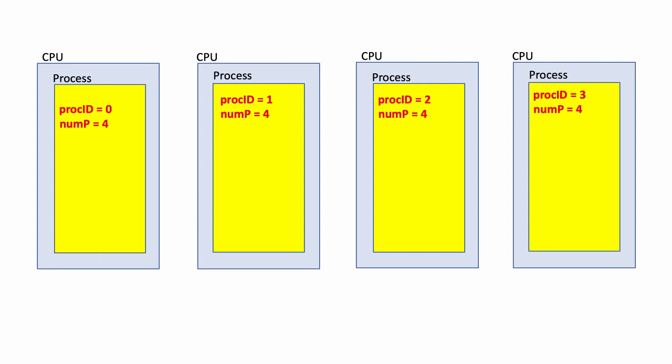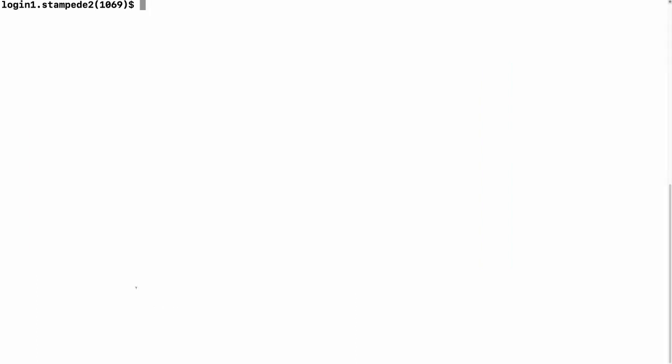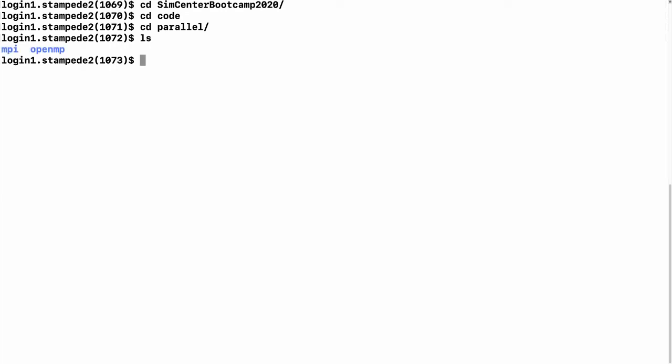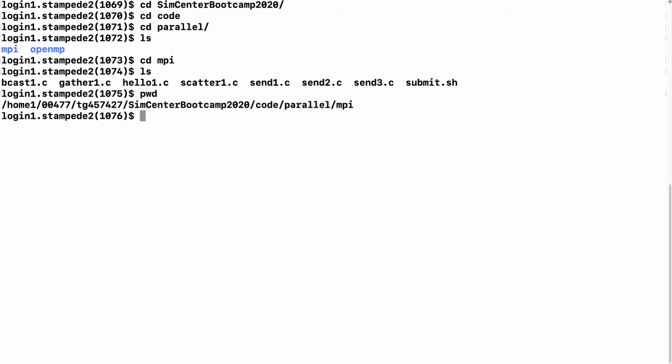Now let me quickly demonstrate in terminal how to build and launch this job on Stampede 2. Okay, so here I am at a login node on Stampede 2. So the first thing I'm going to do is cd into SimCenter Bootcamp 2020. I will cd into code, cd into parallel, and cd into MPI. If I look here, I have all the files I'm going to show in this presentation.